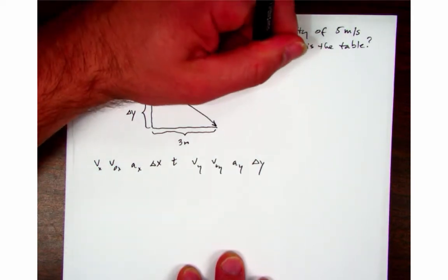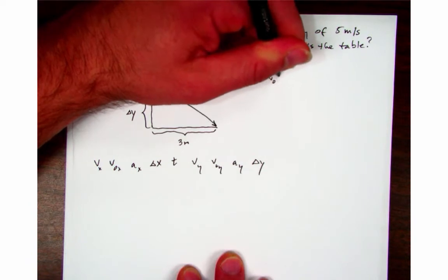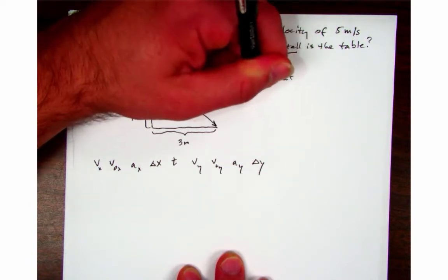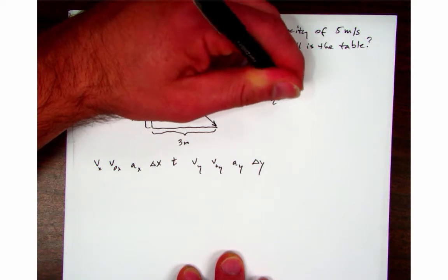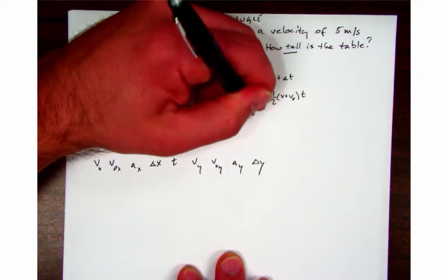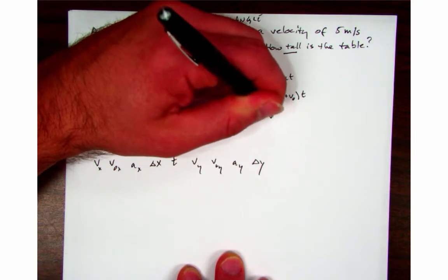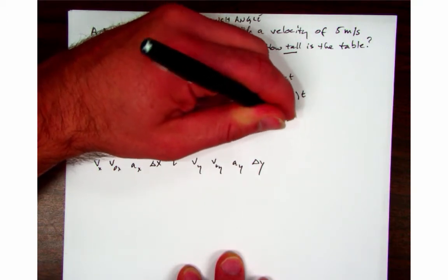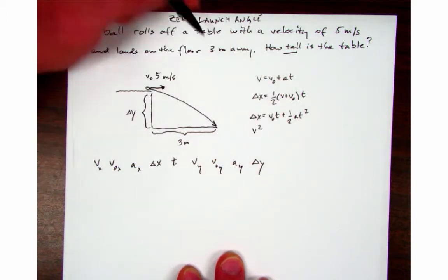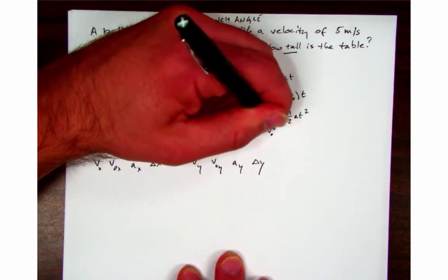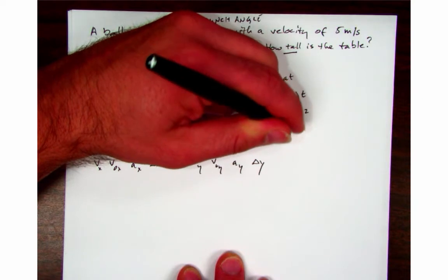I've got v equals v naught plus a t. I've got delta x equals one half v plus v naught times t. I've got delta x equals v naught t plus one half a t squared. And I've got v squared equals v naught squared plus two a delta x.